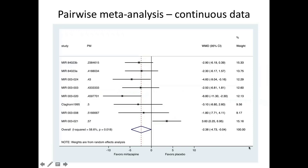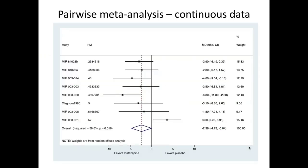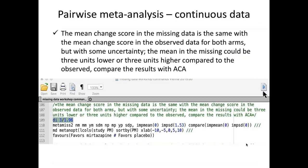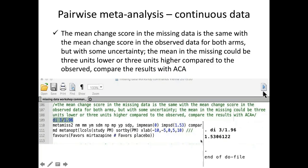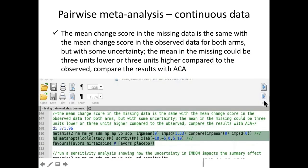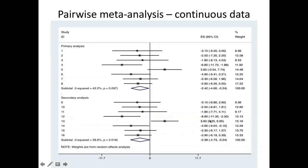We run the available case analysis using the metan command and obtain the results. Using the metamuse2 command without defining any IMP parameter gives the same results. Now let's assume the mean change score in the missing data is the same as in the observed data for both arms, but with uncertainty — the mean in the missing could be three units lower or higher. We calculate the standard deviation as 3 / 1.96 = 1.53, then run metamuse2 with impmin 0 and impsd 1.53, comparing with ACA. There is a difference, and the confidence interval of the available case analysis is wider.